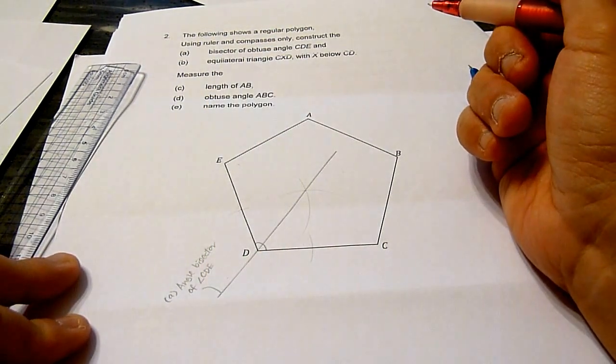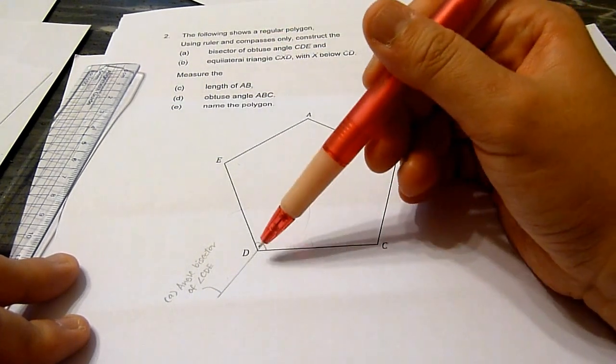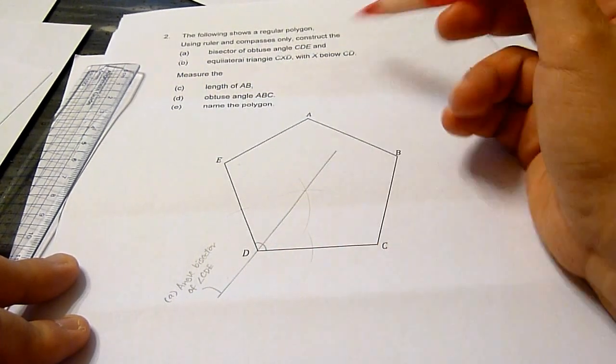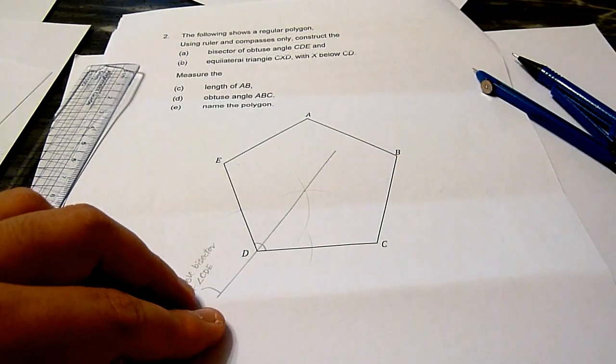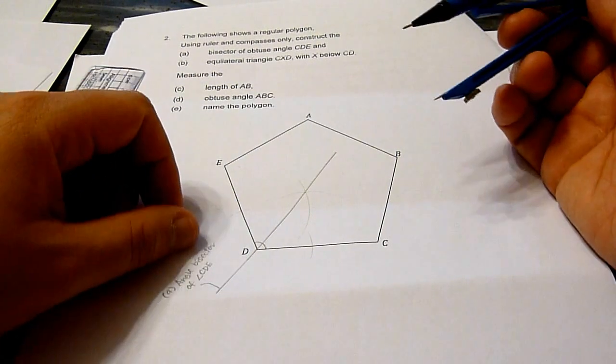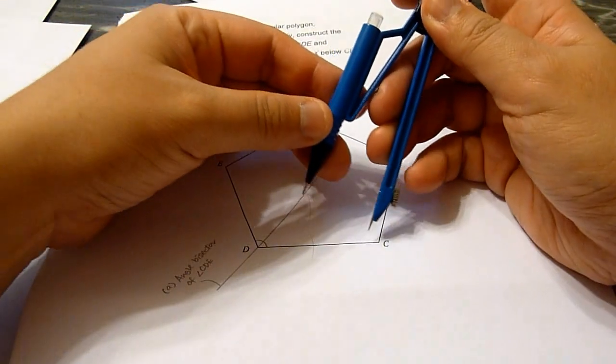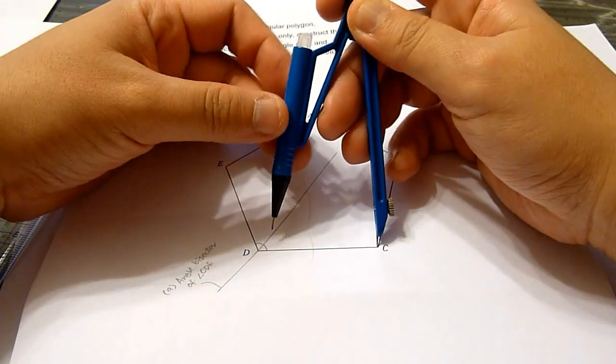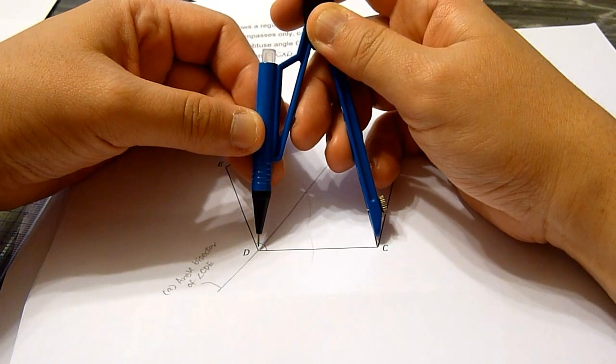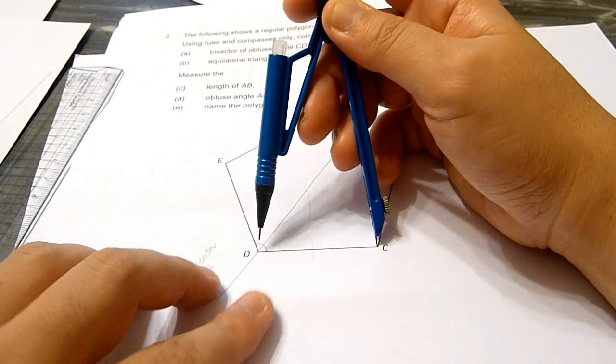Next, we construct an equilateral triangle CXD where X is below CD. To do that, we know that the equilateral triangle has three equal sides, and therefore the length would be the same as CD for all three sides.